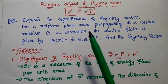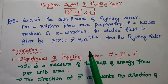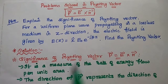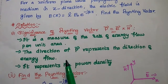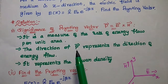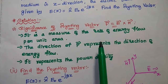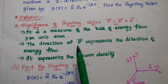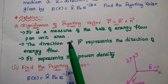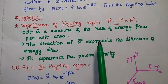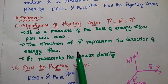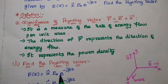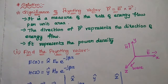The first part is to explain the significance of the Poynting vector. The Poynting vector is the cross product of electric field and magnetic field intensities. It represents the rate of flow of energy per unit area — it is a measure of the rate of energy flow per unit area. Its direction represents the direction of energy flow, and it represents the power density of the uniform plane wave.